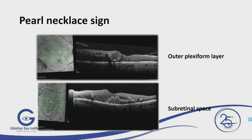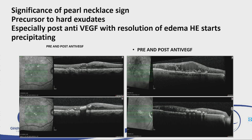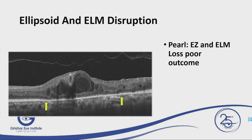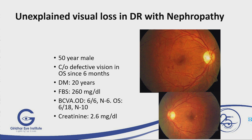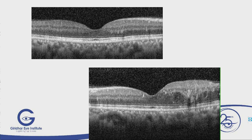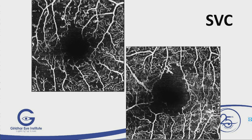When there are a lot of hyperreflective dots inside a cyst or subretinal space, there is a chance of clumping after injection, so don't treat aggressively — treat slowly. Pre-treatment shows lots of hyperreflective dots; post-treatment they became clumped in the center, giving ellipsoid and ELM disruption and poor prognosis. OCTA is also useful in DME — in a patient with nephropathy where a dye angiogram couldn't be done, OCTA gives the information needed.